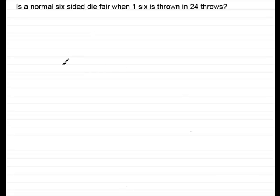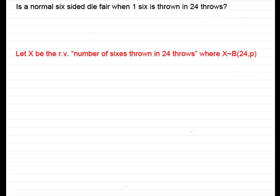What I'd like to do is show you this example here. Is a normal six-sided die fair when one six is thrown in 24 throws? This is a binomial model. I can define a random variable, let X be the random variable, number of sixes thrown in 24 throws.